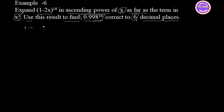We have (1 minus 2x) the whole power 16. The formula is: (x plus y) the whole power n equals x power n, plus nC1 times x power (n minus 1) times y, plus nC2 times x power (n minus 2) times y squared, plus nC3 times x power (n minus 3) times y cubed, and so on, up to y power n.